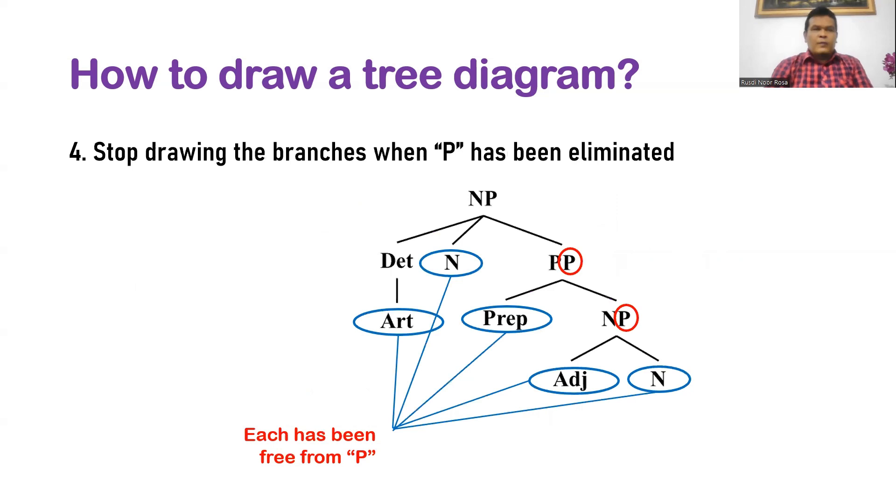Fourth, stop drawing the branches when P has been eliminated. What is P? P stands for phrase. It means that you have to eliminate all P here before you stop drawing the branches. As long as the letter P still exists in the diagram, you have to draw the branches of that P.